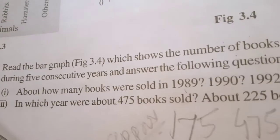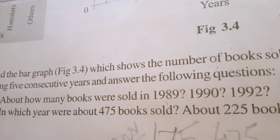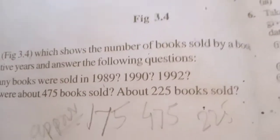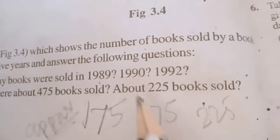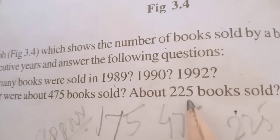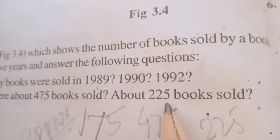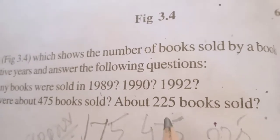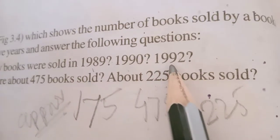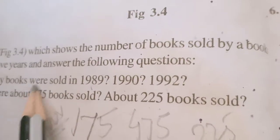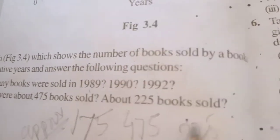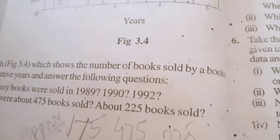See the next part of the question: in which year were about 475 books sold? Just now we calculated 475 books in 1990. About 225 books sold in 1992. Means in answer of question 1, we are getting the answer of question 2 also.